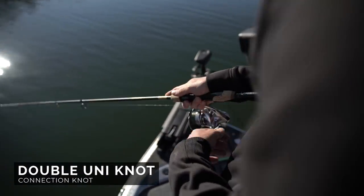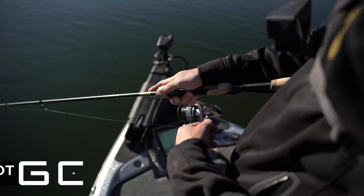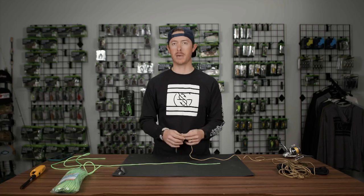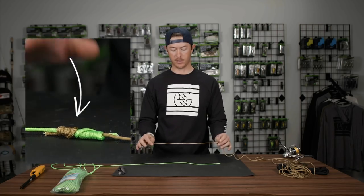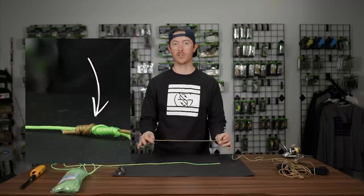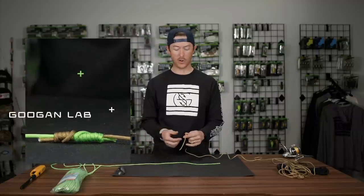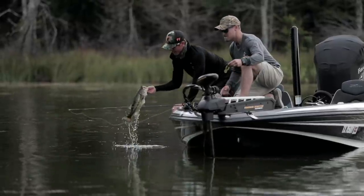Connection knots are important in your fishing braid-fluoro connections. That's probably the most common in bass fishing. This is really to connect these two in a quick, secure way. Make sure that fish is not getting away.